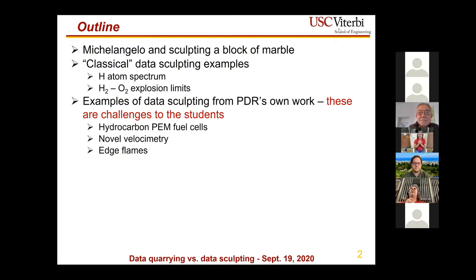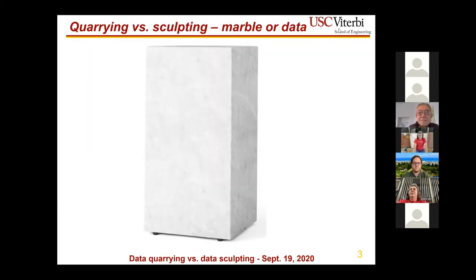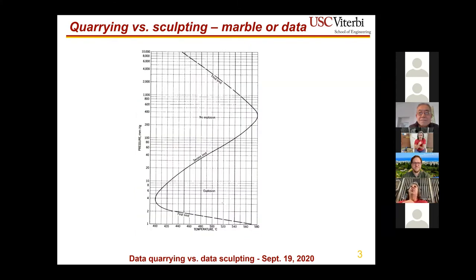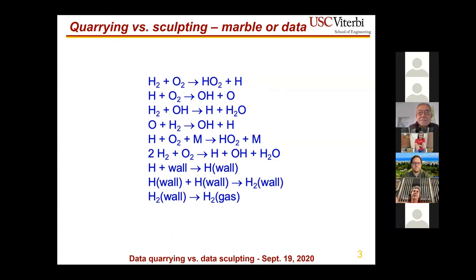The idea is to get used to thinking not just about collecting data, but about what it really means. When Michelangelo looked at a block of marble, he didn't just see the block — he already saw the figure inside. All he had to do was release it. Similarly, looking at the three explosion limits of hydrogen, what matters is not the block of marble itself but the hidden meaning underneath it.